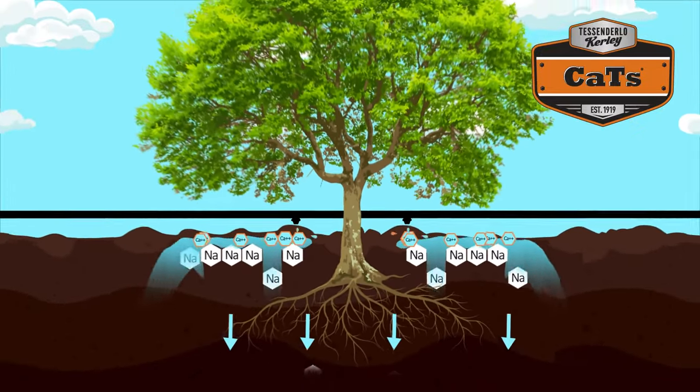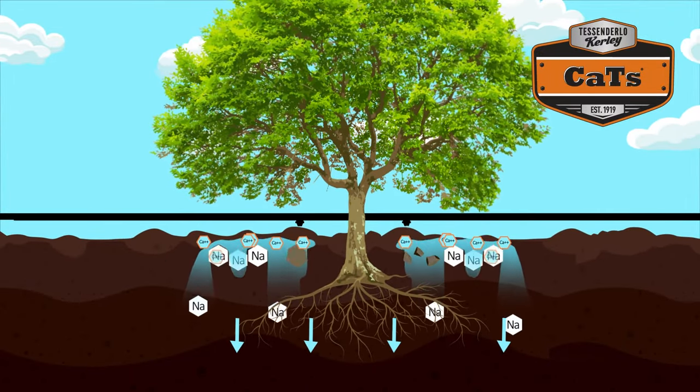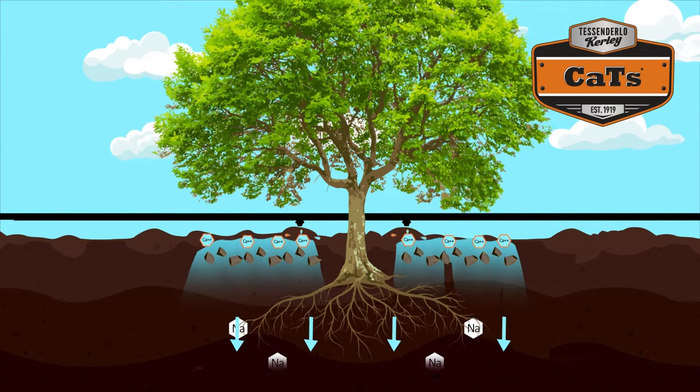Once CATS reaches the soil, it displaces the sodium ions and causes the soil particles to move together to form aggregates.